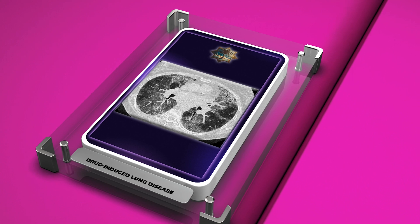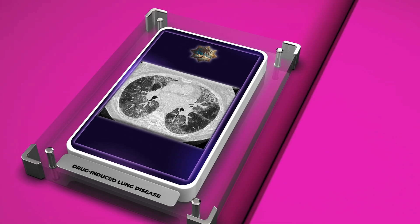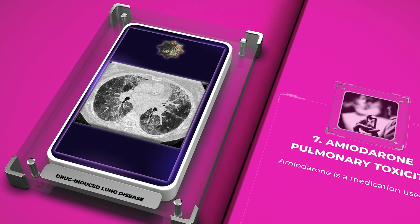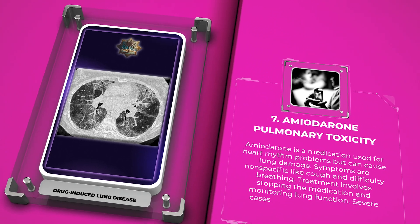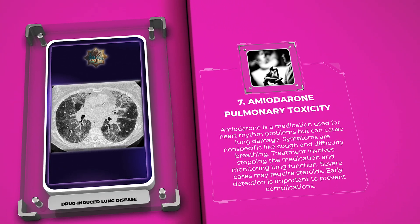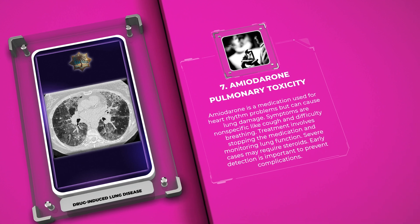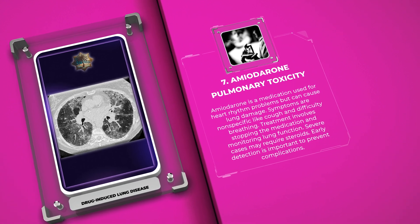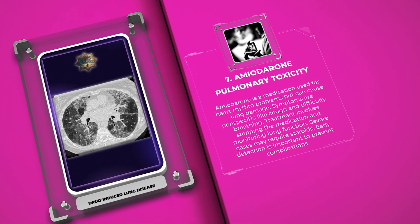Amiodarone is a medication used for heart rhythm problems but can cause lung damage. Symptoms are nonspecific, like cough and difficulty breathing. Treatment involves stopping the medication and monitoring lung function. Severe cases may require steroids. Early detection is important to prevent complications.